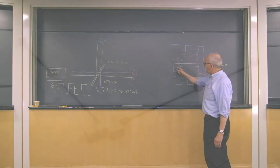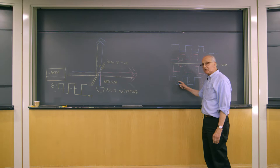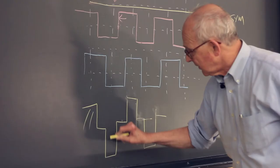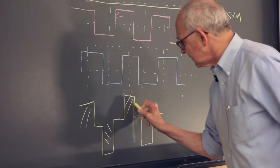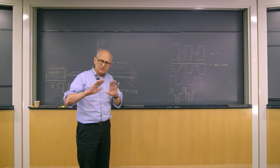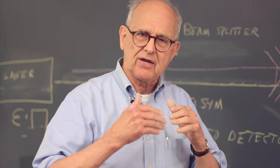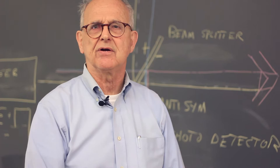Now let's put in the fact that the gravitational wave comes along and stretches one side and shrinks the other. When I add these two, I don't get zeros anymore — now there is light hitting the photodetector. That is the basic idea. A gravitational wave comes along, it destroys the difference between the two paths so that we no longer have zero light. We get light, and so we have converted the gravitational wave into an amount of light that appears at the photodetector. That is the fundamental idea behind the measurement.